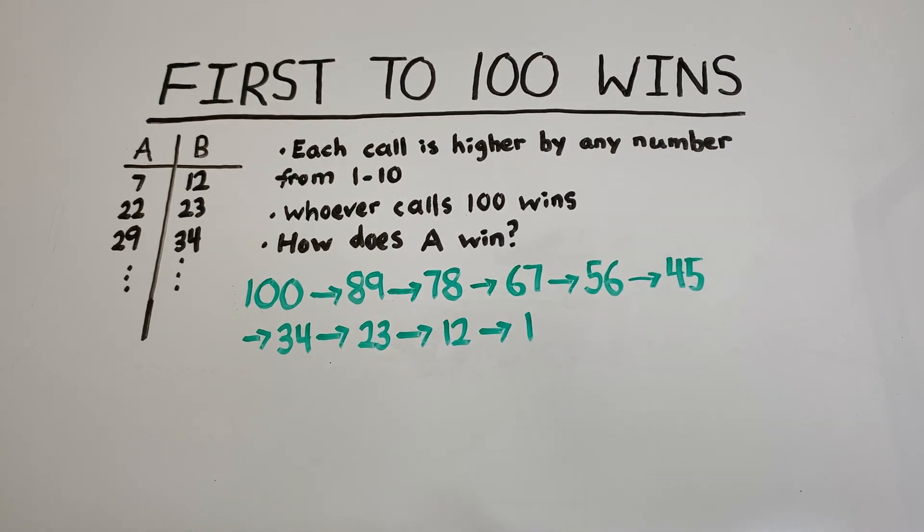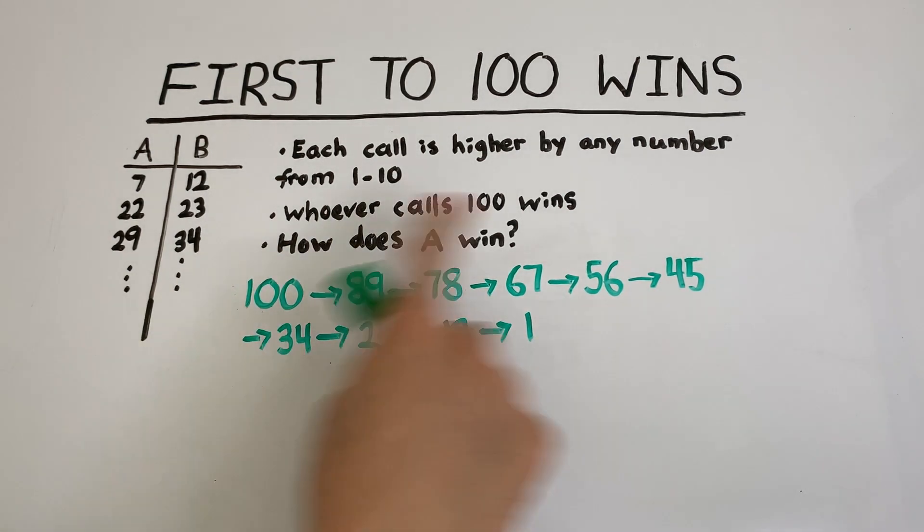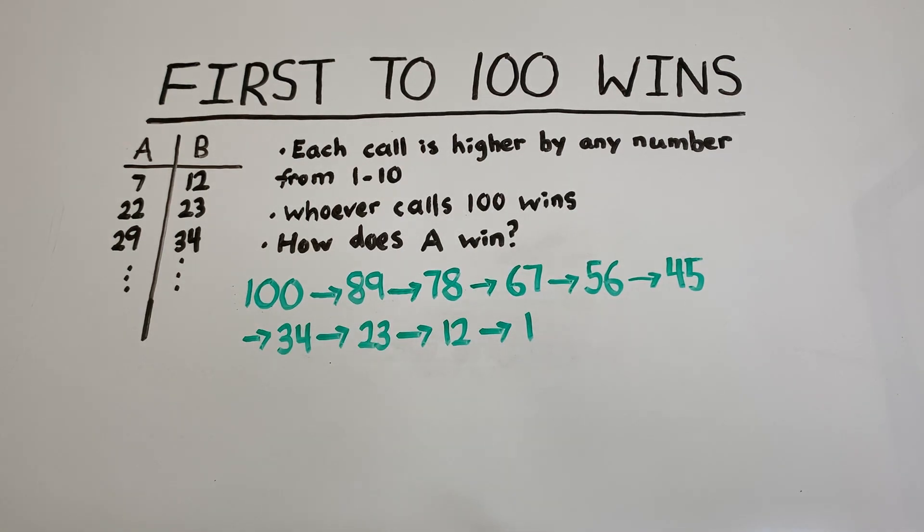So we see how A can definitely win the game. A can start off by saying 1. Whichever number B calls will be any number between 2 and 11. Then A can call 12. B can only call numbers from 13 to 22. A can call 23, then 34, 45, 56, 67, 78, 89. And finally A can call 100. And there's absolutely no way for B to disrupt the series. And that is how A wins and calls the number 100.